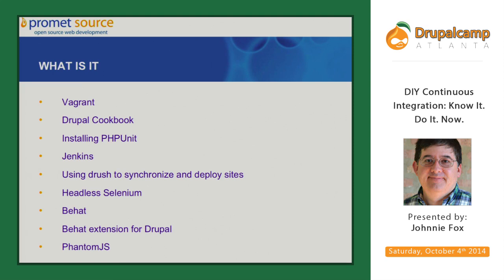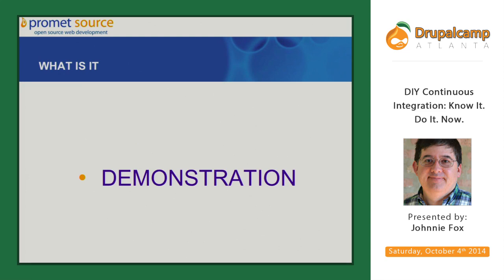We use Jenkins. We use Drush to sync and deploy sites. Headless Selenium PhantomJS works with Behat — there for testing from a browser, for when I want to be on a page and click into a field. You need something to automate the browser, especially if you've got JavaScript. Behat is a testing framework. I'll be showing a demonstration of it — it's a very English, language-based testing platform. There's a Drupal extension for it. Behat is really the most sexy part of continuous integration that we've done.